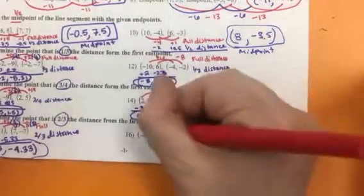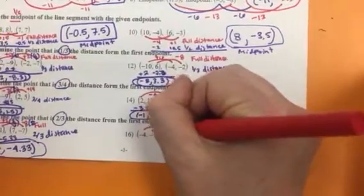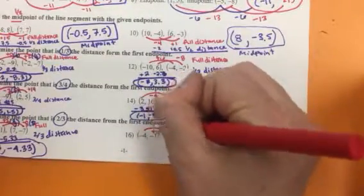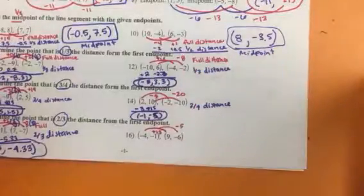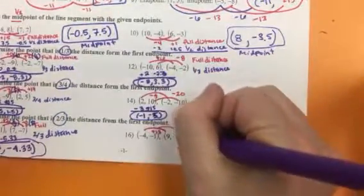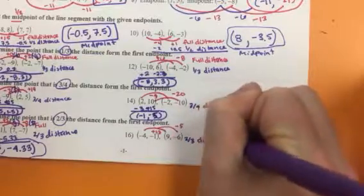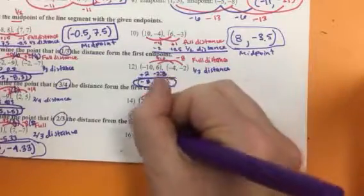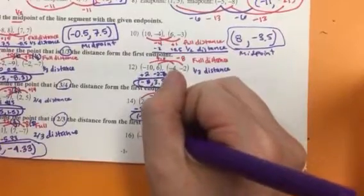Number 16: negative 4 to 9, we are adding 13. Negative 1 to negative 6, we're subtracting 5. That's the full distance. I want two-thirds the distance. So if I take two-thirds of 13, I'm going to get...